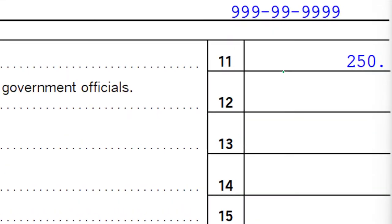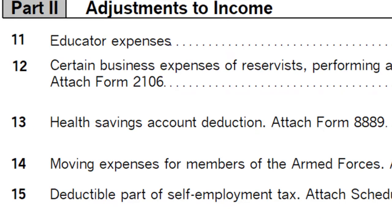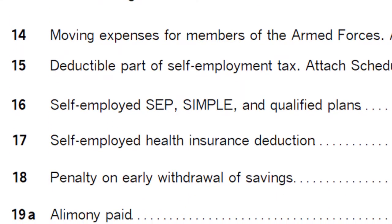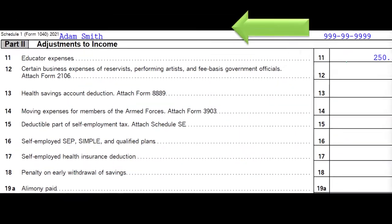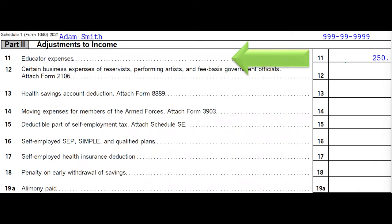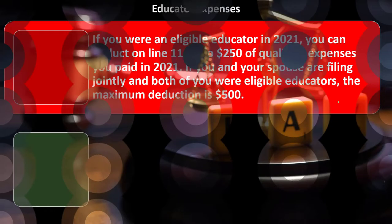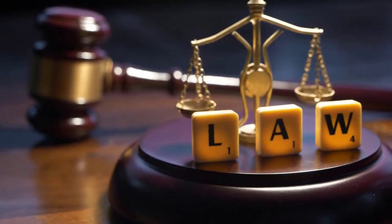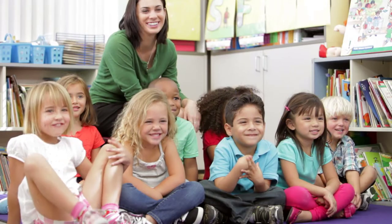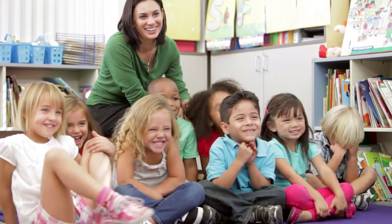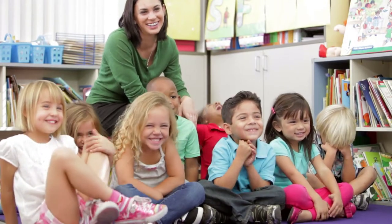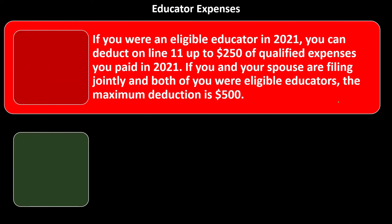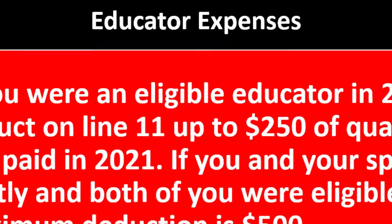If they're married and one spouse is a teacher, the cap is $250. If both spouses are teachers, it can be $500 — that's basically the general rule to keep in mind for a qualified educator. This industry-specific item hasn't changed much over the years and hasn't kept pace with inflation.